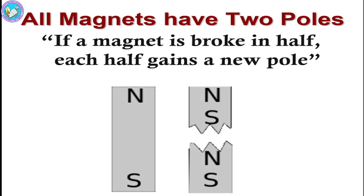The next point is that if a magnet is broken in half, each piece will form a new pole. If you see this diagram, the bar magnet has been broken — that half of the magnet will act as a north pole and south pole. The other half will also act as a north and south pole. This is the first property.